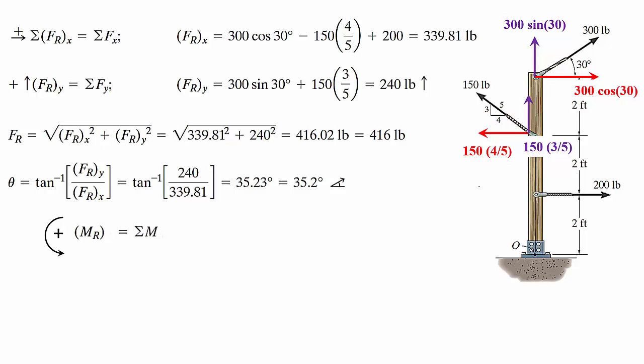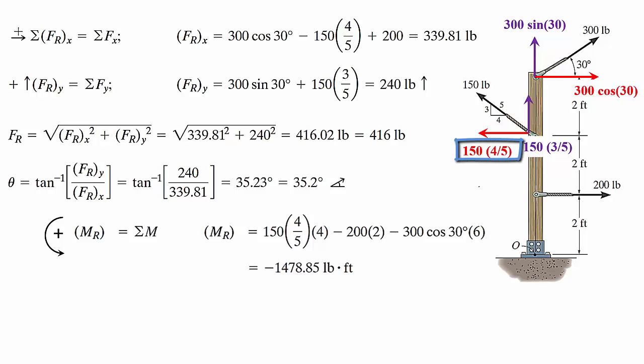Now if I take the summation of the moments, I can see that I don't have any concentrated moments in the system in general. Again, assuming that the counterclockwise is positive, I will only have the moments produced by the components. About point O, you will realize that two of the components as shown in the figure will pass through the point of interest. So they will not produce any moments. In this case, I will have 150 times 4 over 5 times 4 minus 200 times 2 minus 300 cosine 30 times 6. The 4, the 2, and the 6 are the distances and the 150 times 4 over 5, the 200, the 300 are the forces. And if I sum them up, I will have negative 1478.85 pound feet.